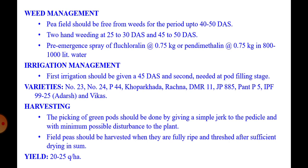Harvesting: picking of green pods should be done by giving a simple jerk to the pedicel with minimum possible disturbance to the plant. Field peas should be harvested when they are fully ripe and threshed after sufficient drying under the sun. Yield: 20 to 25 quintals per hectare dry yield can be obtained.